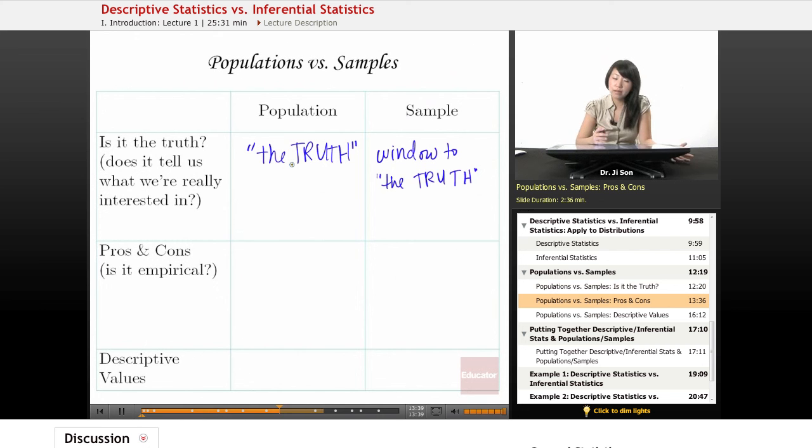All right, so some pros and cons. So some pros of the population is this: because it is the truth, if you happen to have all the information about the real population, it will be absolutely 100% accurate. However, here's the con. It's almost impossible to get.